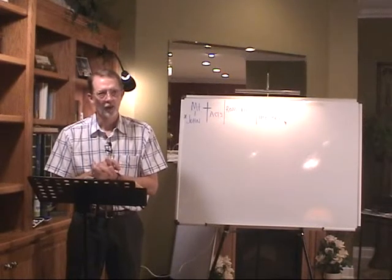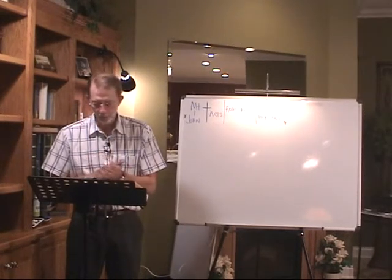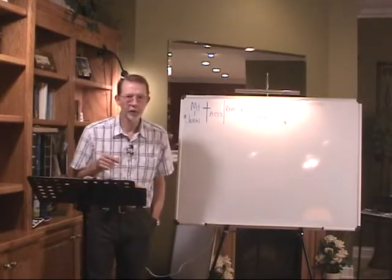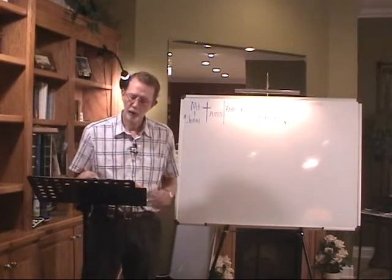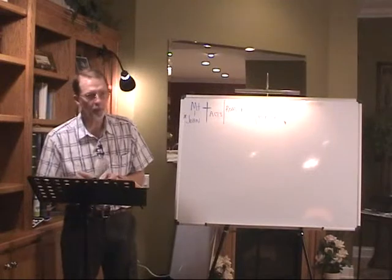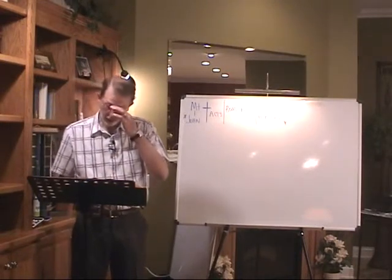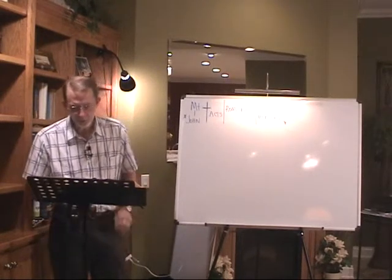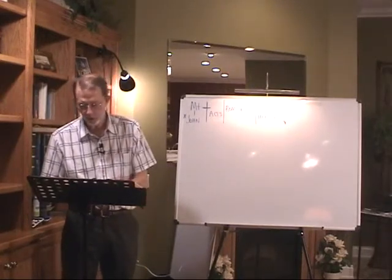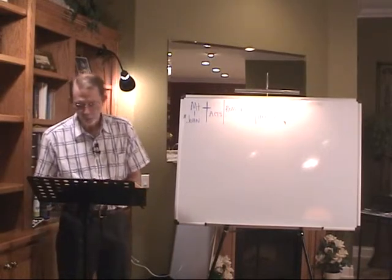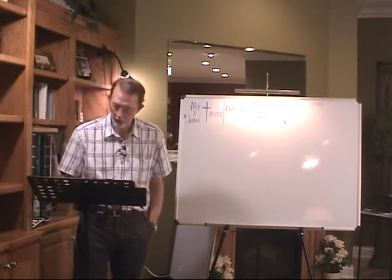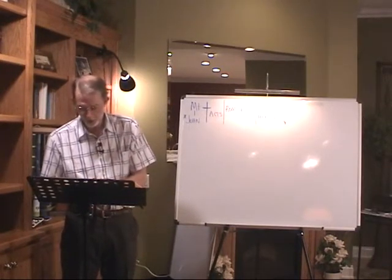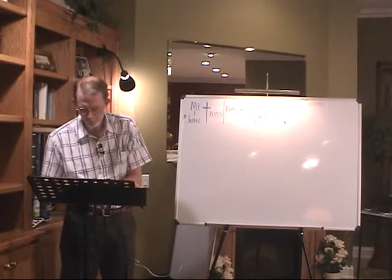Welcome to class tonight. We're going to begin in 2 Timothy chapter 2 and from there go to James chapter 1, continuing our study comparing the Pauline epistles with what we call the Hebrew epistles in the King James Bible. Read with me in 2 Timothy 2 from verse 7: 'Consider what I say and the Lord give thee understanding in all things. Remember that Jesus Christ of the seed of David was raised from the dead according to my gospel, wherein I suffer trouble as an evildoer, even in bonds, but the word of God is not bound. Therefore I endure all things for the elect's sakes, that they may also obtain the salvation which is in Christ Jesus with eternal glory.' Come down to verse 15.